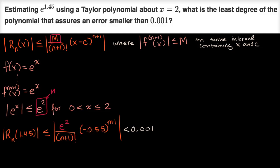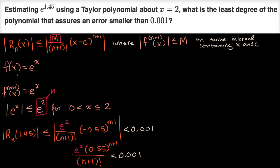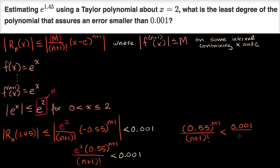Let's do a little algebraic manipulation. e squared is positive, n plus one factorial is positive, and negative 0.55 to some power will flip sign, but since we're taking the absolute value, we can write this as: e squared times 0.55 to the n plus one over (n plus one) factorial is less than 0.001. Dividing both sides by e squared, we need 0.55 to the n plus one power over (n plus one) factorial to be less than 0.001 over e squared.